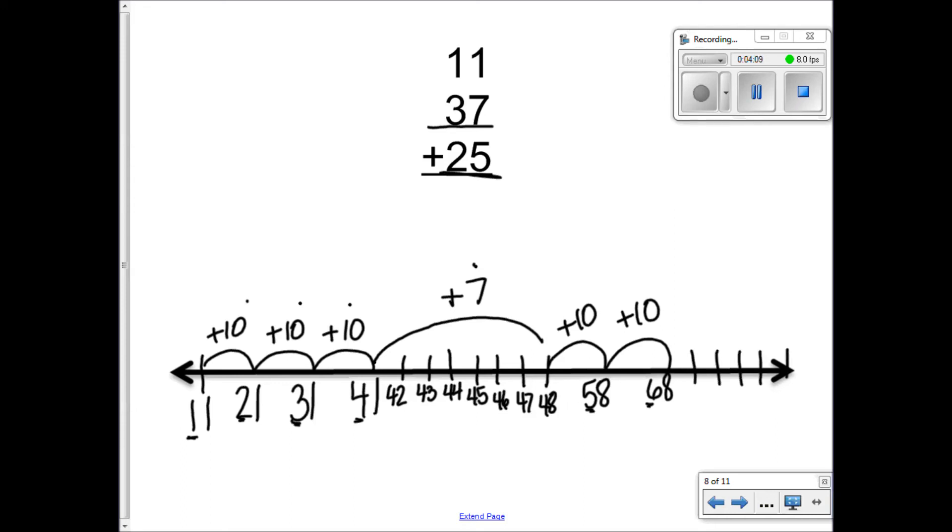So here are my five ones, two tens, five ones, here we go, sixty-eight. One more is sixty-nine, and then seventy, seventy-one, and then seventy-two, and then seventy-three. So now I know the sum of eleven and thirty-seven and twenty-five is seventy-three.